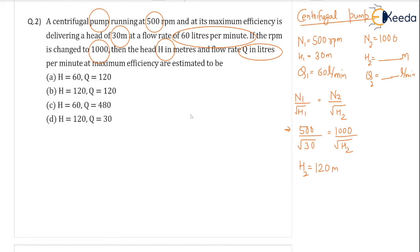And for calculation of discharge, we are having the relation q1 by root h1 equal to q2 by root h2. And the value of q1 is 60 liters per minute by root h1 which is 30 equal to q2 unknown value h2 which is already calculated 120. So your q2 is coming out to be 120 liters per minute.